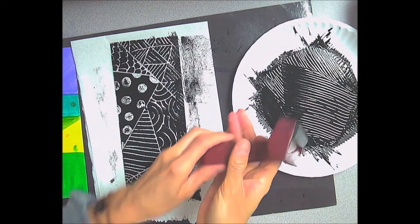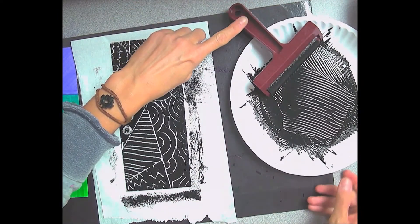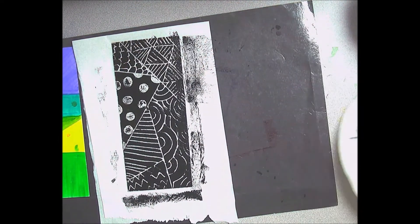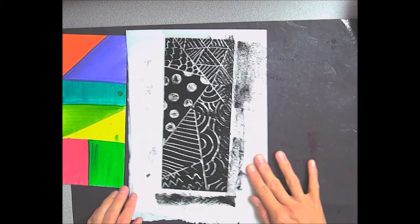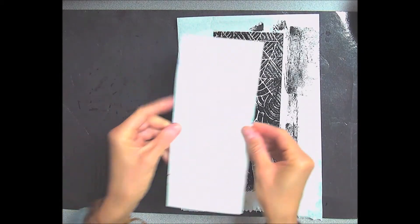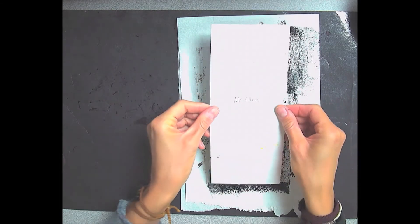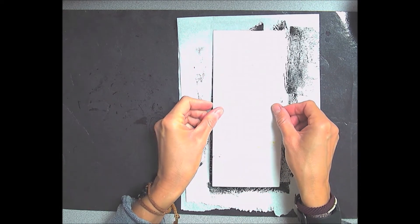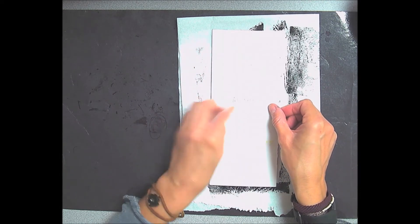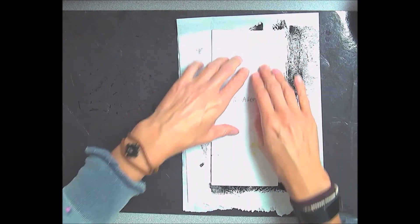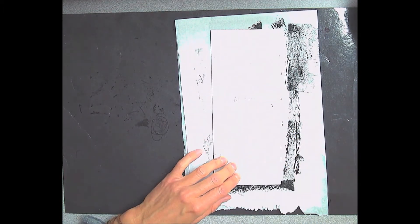Put the brayer onto the plate with the handle sticking out so it doesn't get messy for the next person to use. Then you're going to take your colored piece of paper, flip it over with your name facing up, and gently tap it starting from the top of your paper to the bottom. I'm just giving it a couple taps to let it stick.